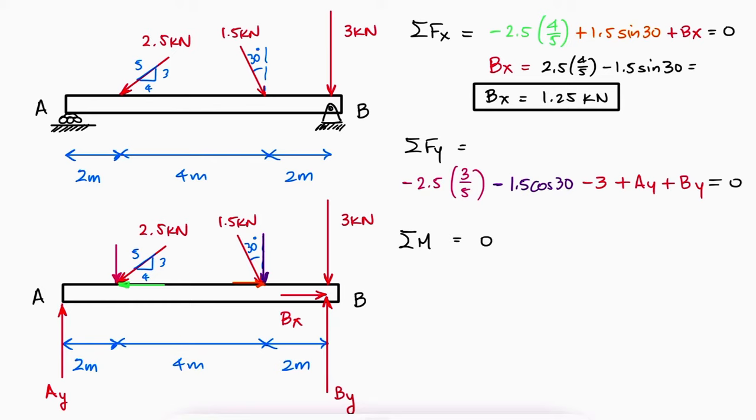For this reason, the point that we select to do the sum of moments should be one where one of these two unknown forces is not present. Otherwise, we would end up with two equations and two unknowns, a process that, although possible, would take more time.